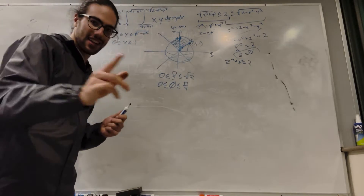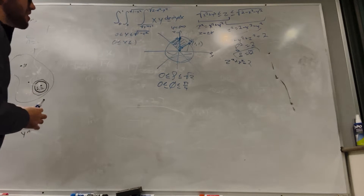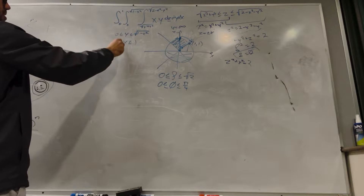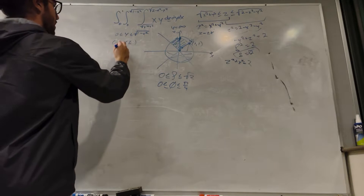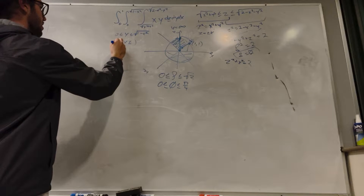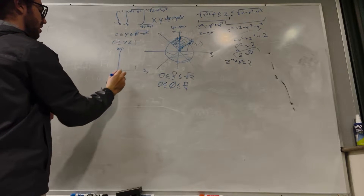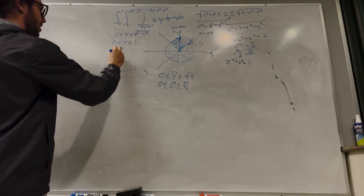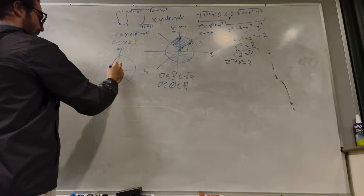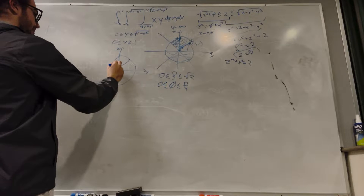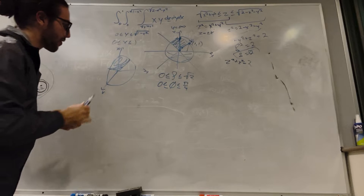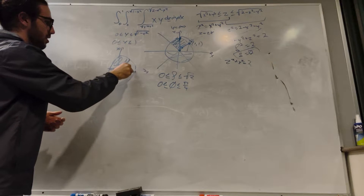And theta is going to go from 0 to 2 pi because we're making a full rotation. Actually, I lied — we're not making a full rotation. Because x is greater than 0 and y is greater than 0, I'm going to graph this in 3D. It's going to be our cone in the first octant, basically. So that means theta has to go from 0 to pi over 2.